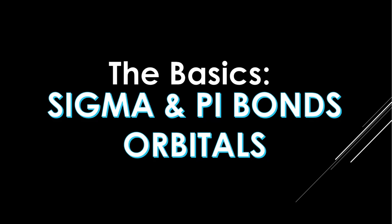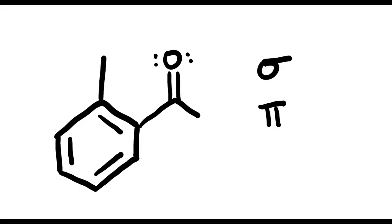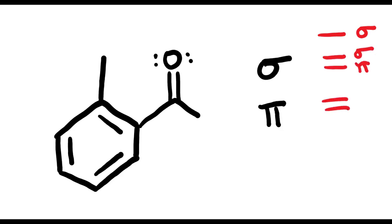Hey guys, it's Lexi, and in this video on the basics, we'll be talking about sigma and pi bonds and orbital overlap. So let's say you got a question and you're asked to determine the number of sigma bonds and pi bonds. The first thing to remember is that a single bond is composed of just a sigma bond. A double bond has both a sigma bond and one pi bond, and then a triple bond has a sigma bond and two pi bonds.